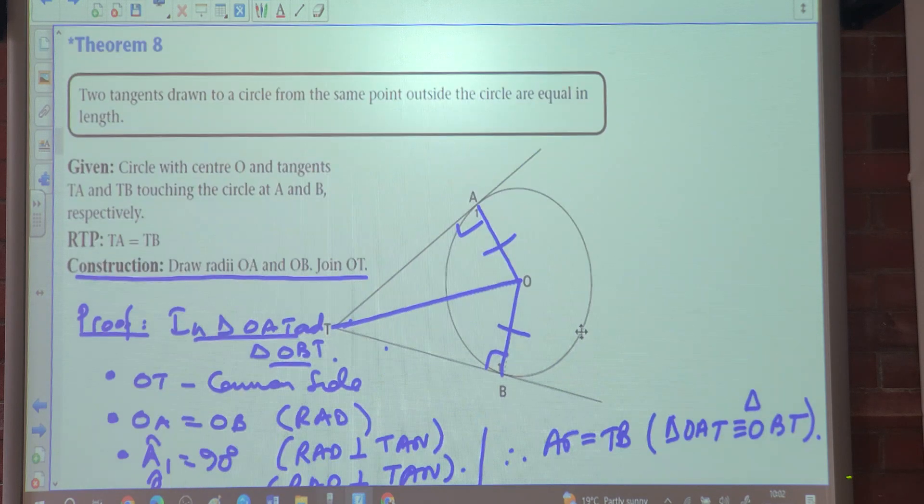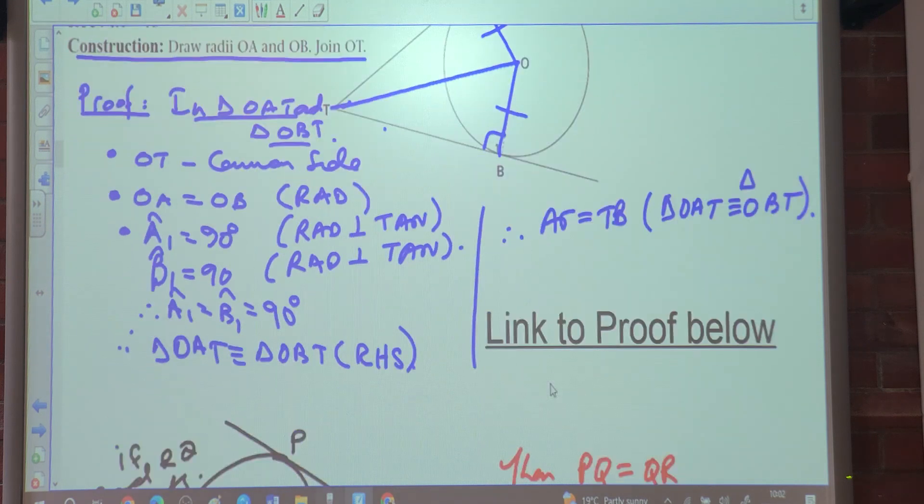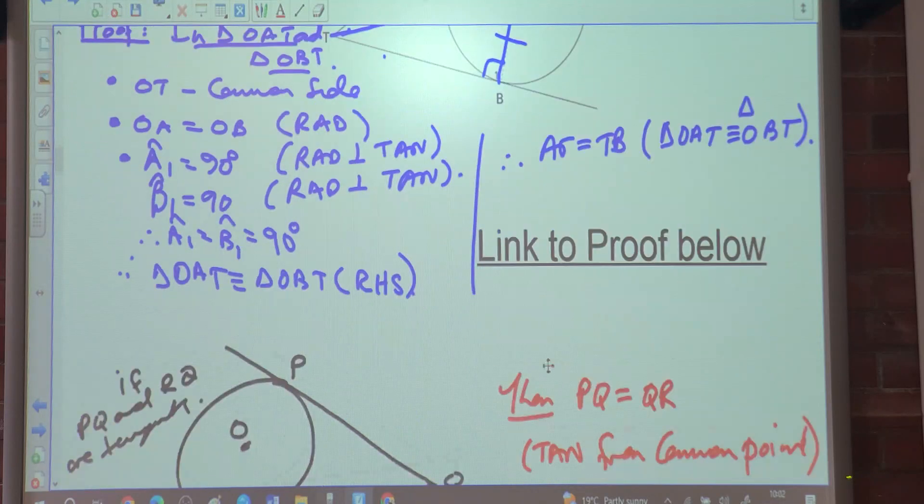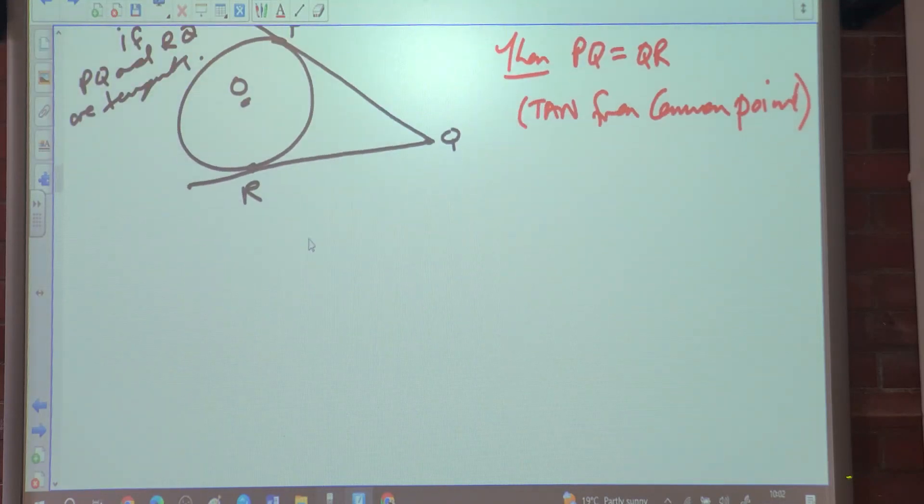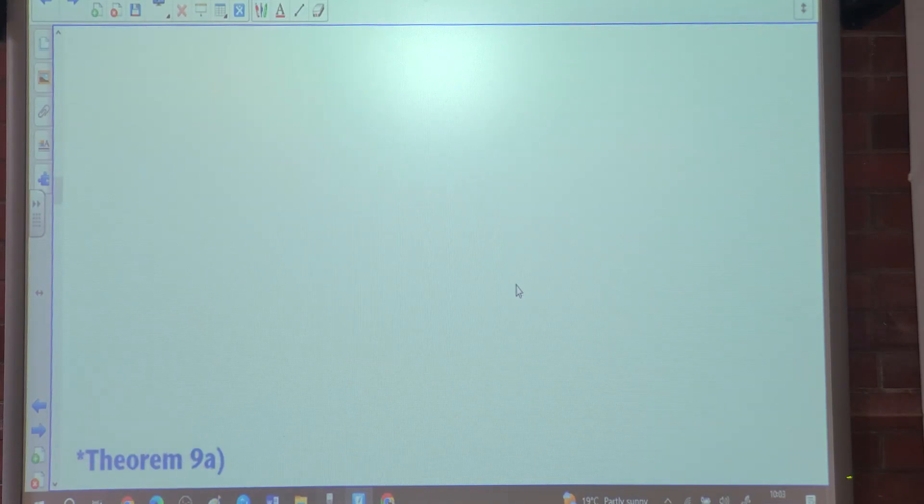I haven't seen this formula come in the exam, but there's a study, so I did it in here. However, this formula's proof can be found in the description box below. Then we said that if you are given two tangents, we can conclude that PQ is equal to RQ, tangents from common point.